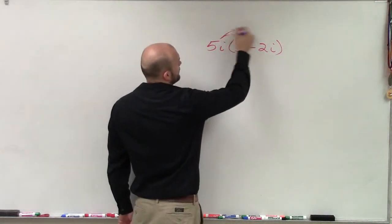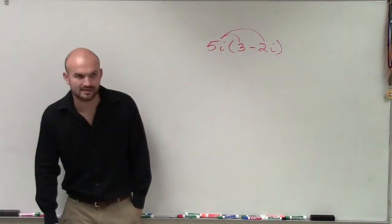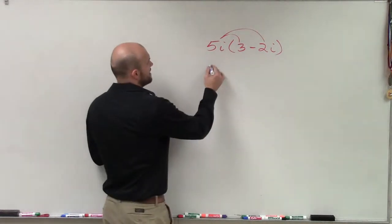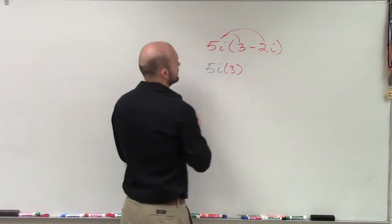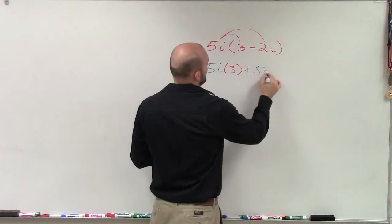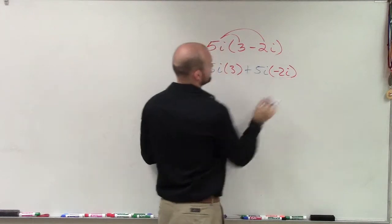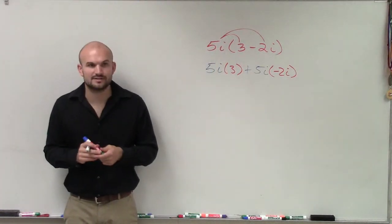But until then, if I have multiply, we need to make sure we apply distributive property, just like anything else. So, therefore, in this case I have 5i times 3 and then I have a positive 5i times negative 2i. Just like any other time.